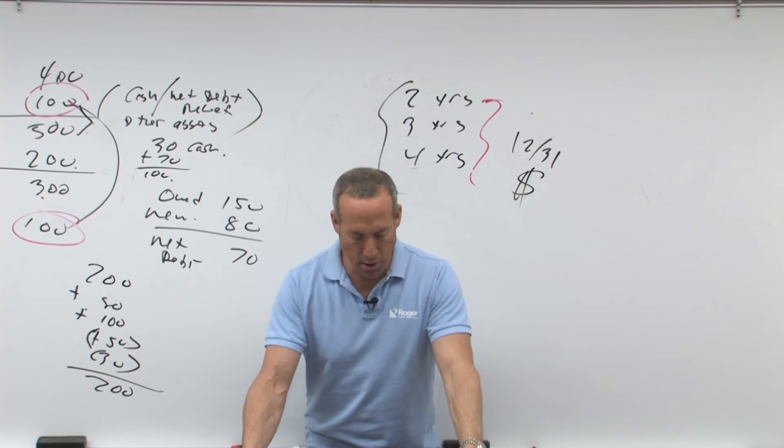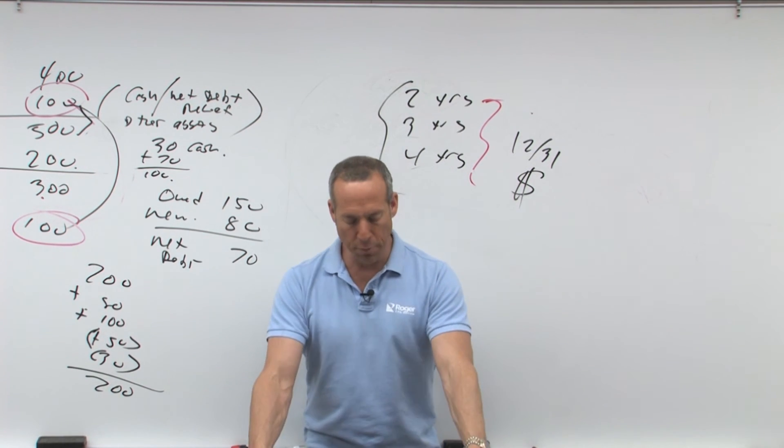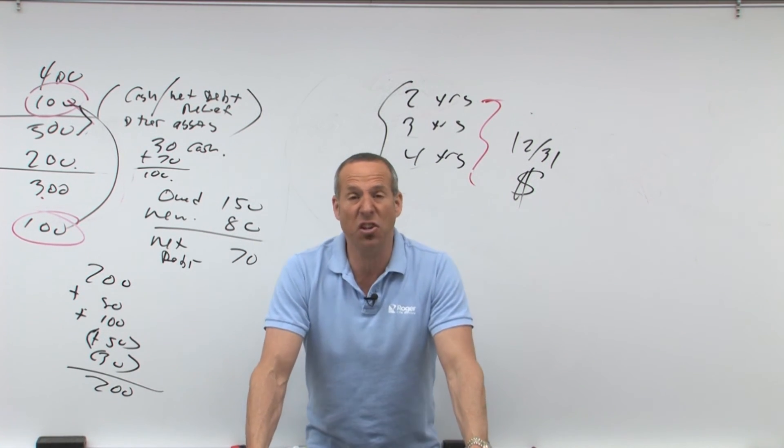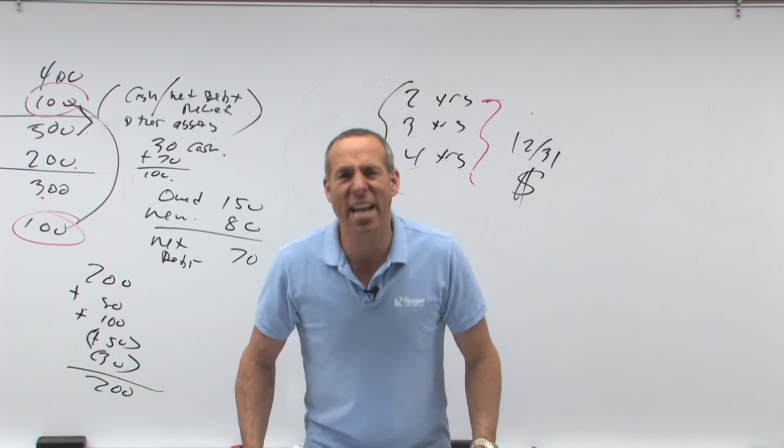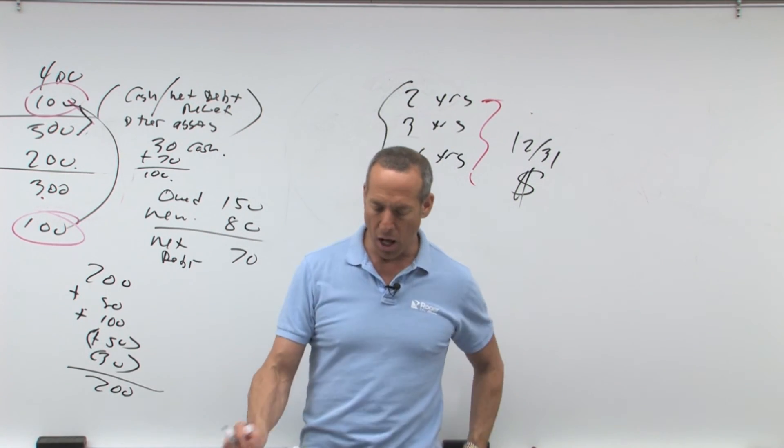What about losses? Losses, those would be shown on your Schedule A as a theft or casualty loss, subject to what? 10% of AGI minus $100 per event.